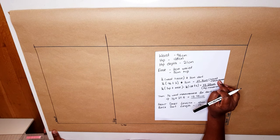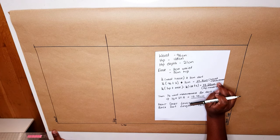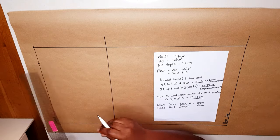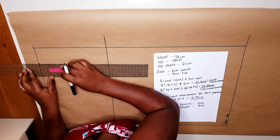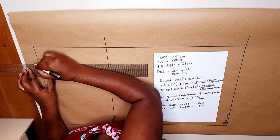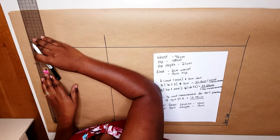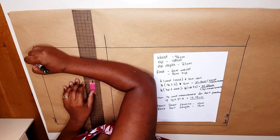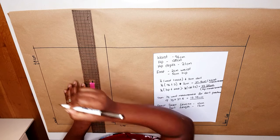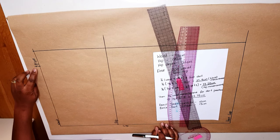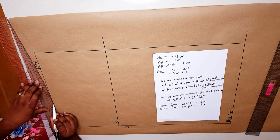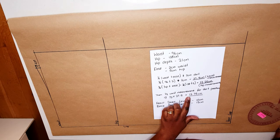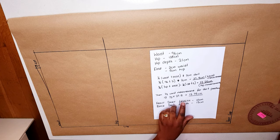Take your waist measurement and transfer it to the waistline — for me that's 27.5 centimeters. From there, square a small line across. Then measure one centimeter up and put a mark. This point we just marked is going to help us shape our waistline. Get your curved ruler and mark the line up, just like that.